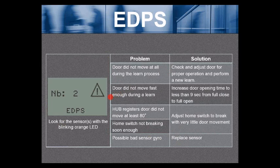The next most common EDPS error is the door did not move fast enough during a learn. Maybe you installed this system on a slow speed or slow moving door or maybe a low energy door. You'll need to increase the door opening time to less than 9 seconds from full close to full open.